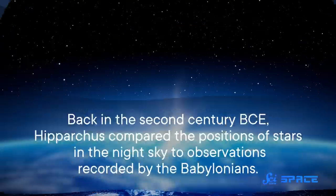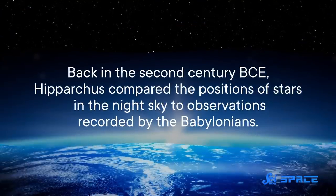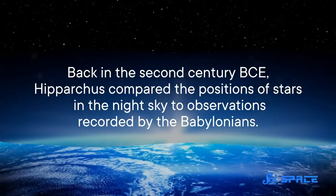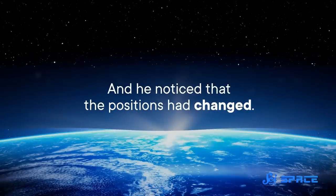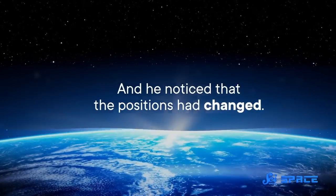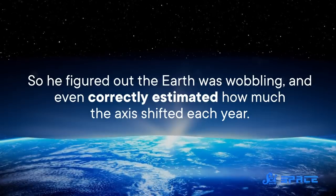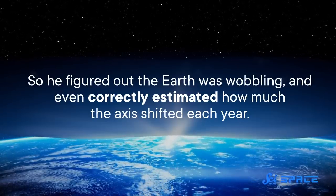While we don't know for sure who discovered this phenomenon, it's usually attributed to the Greek astronomer Hipparchus. Back in the 2nd century BCE, he compared the positions of stars in the night sky to observations recorded by the Babylonians, and he noticed that the positions had changed. So he figured out the Earth was wobbling, and even correctly estimated how much the axis shifted each year.